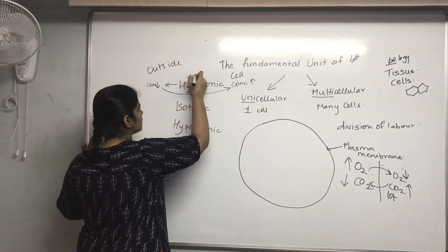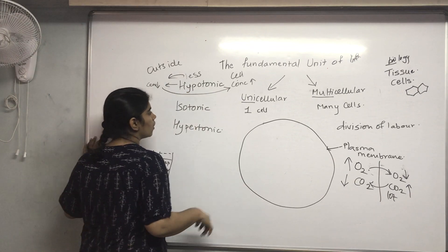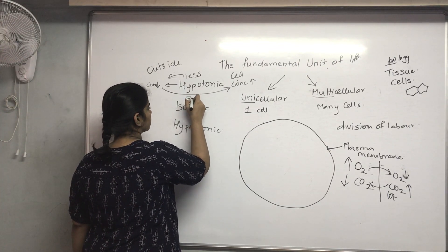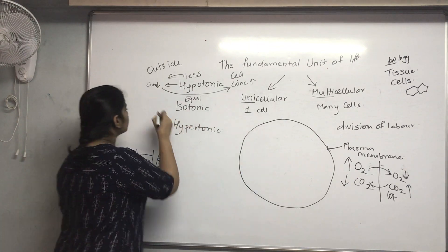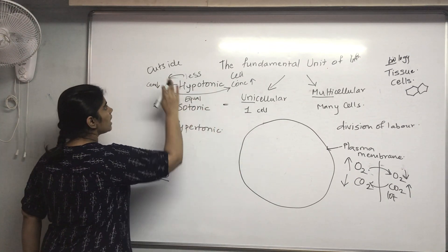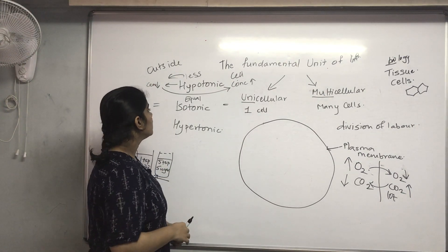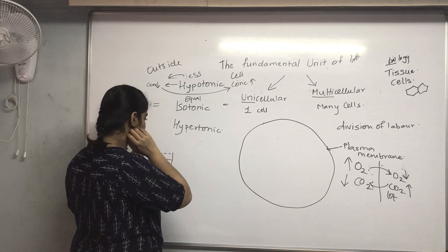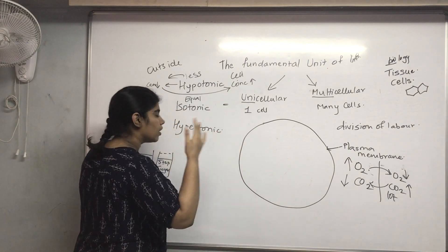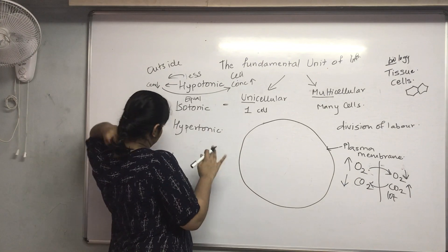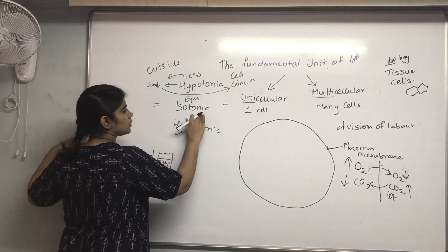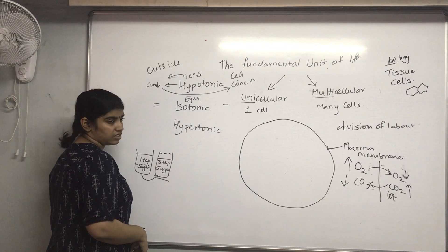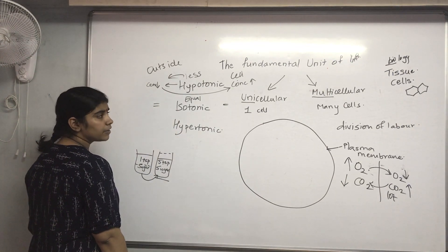In an isotonic solution, 'iso' means equal. If the concentration on both sides — inside and outside the cell — is equal, water movement occurs but each side neither gains nor loses, so overall movement is cancelled. The environment and cell are in equal proportion in terms of water.